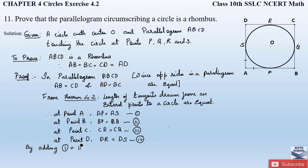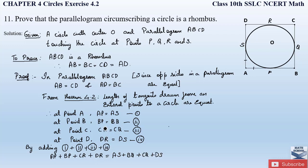Adding equations 1 + 2 + 3 + 4, the left-hand side gives AP + BP + CR + DR and the right-hand side gives AS + BQ + CQ + DS. From the figure, AP + BP forms AB, and CR + DR forms CD. On the right-hand side, AS + DS forms AD, and BQ + CQ forms BC. So we get AB + CD = AD + BC. Let this be equation 3.